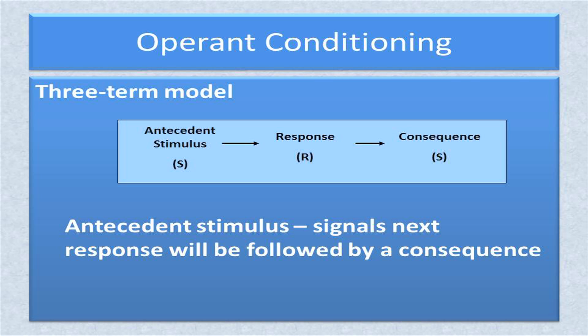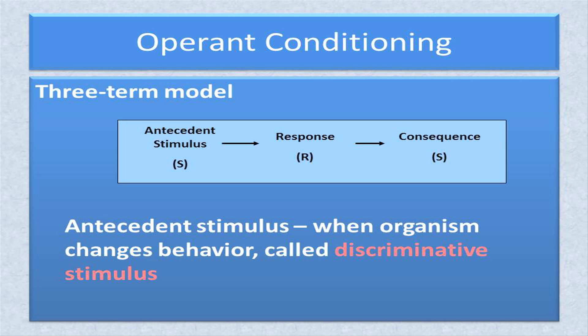An antecedent stimulus is a stimulus that signals that the next target response will be followed by a consequence. It does not actually change the frequency of the response — it merely signals that a consequence will follow the next target behavior. For example, as a child, my mother always referred to me as Bill or Billy. When she said 'William Gregory,' that meant I needed to stop an undesirable behavior immediately. Perhaps that's why parents give children middle names. When the presentation of an antecedent stimulus actually results in a changed behavior, the technical term used is discriminant stimulus — the organism is able to discriminate between a stimulus that signals a consequence is coming and one that is not.